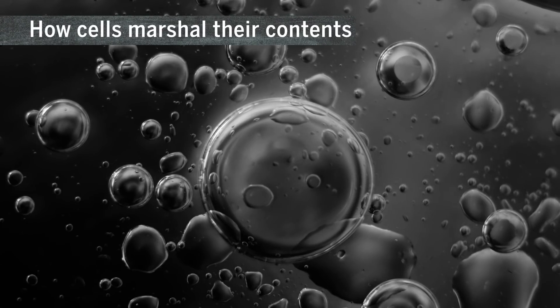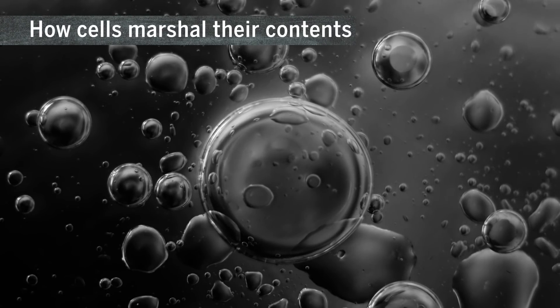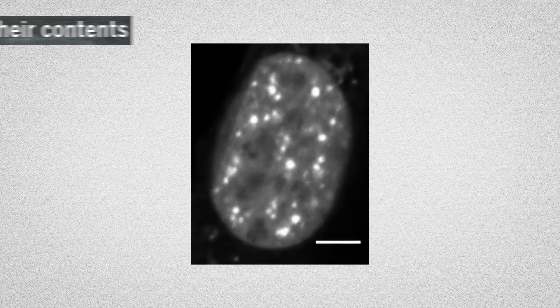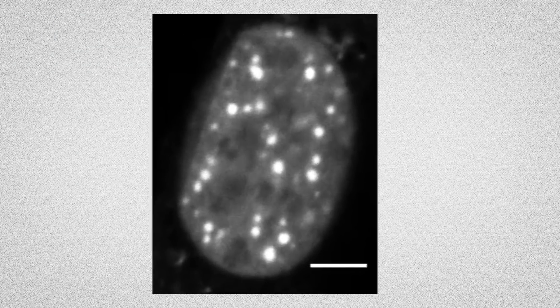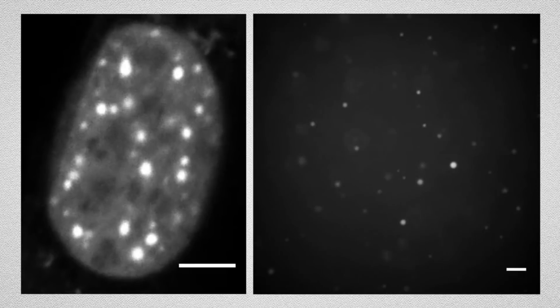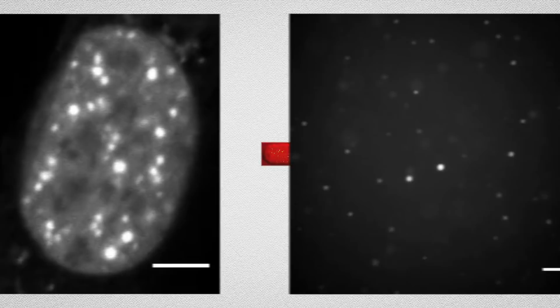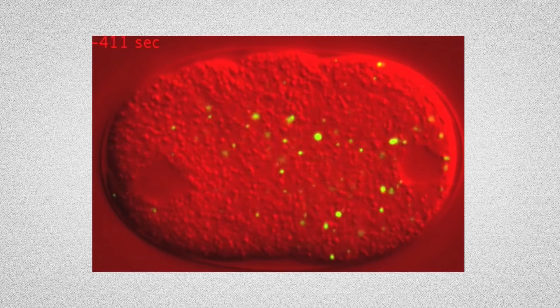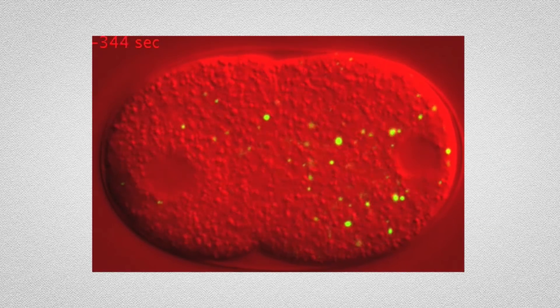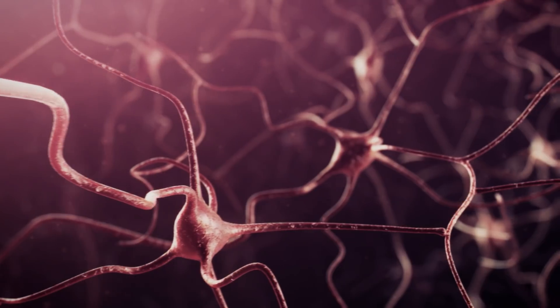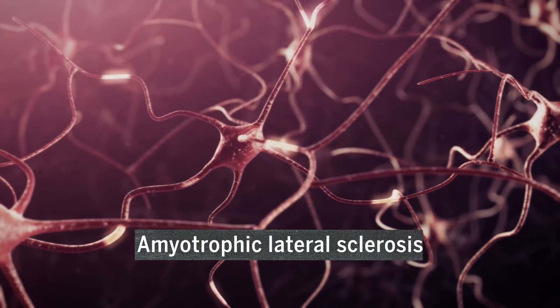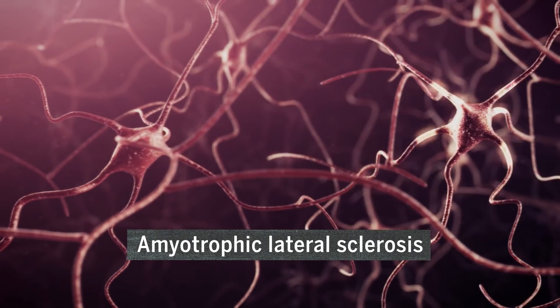This year saw increasing evidence that cellular components condense into tiny droplets, a process called phase separation. The droplets can perform critical functions. Researchers have found they play an unexpected role in the transcription of genes, and they identified a possible path to dissolving solidified droplets that clog the brain and contribute to diseases such as amyotrophic lateral sclerosis.